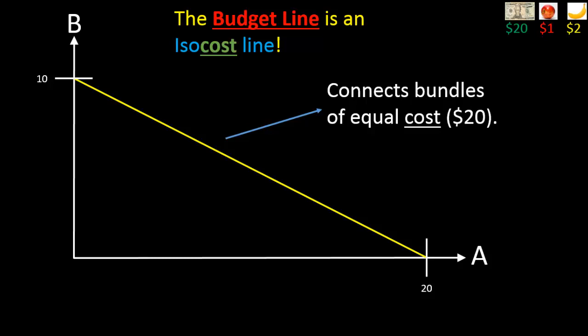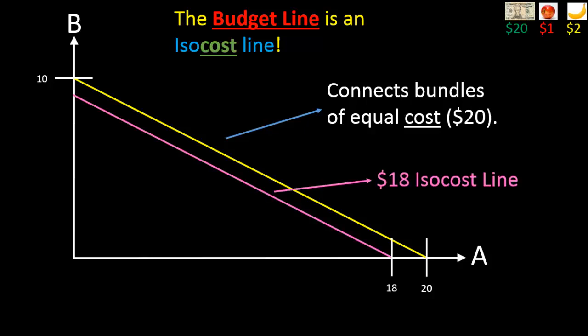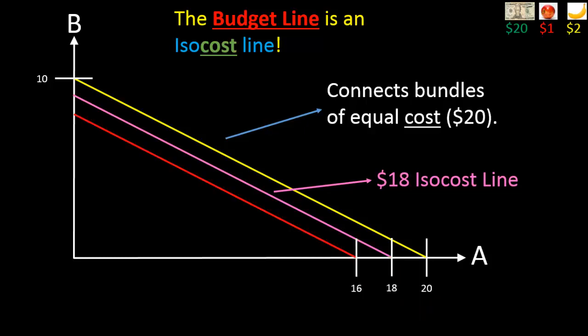And of course, the budget line is not the only isocost line. If we had liked, we could have drawn and labeled several more isocost lines. For example, this pink line here is also an isocost line — it is the $18 isocost line; it connects bundles that cost $18. It runs through the point 18 apples, 0 bananas, and we know that bundle costs precisely $18. Similarly, we could draw the red line here — the $16 isocost line — because it runs through the bundle 16 apples, 0 bananas.